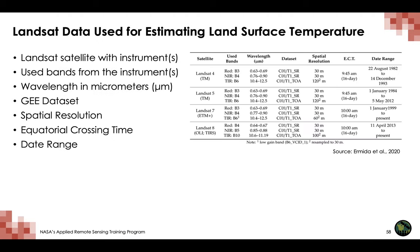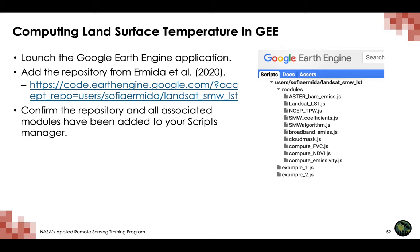This slide lists the Landsat satellites with instruments, bands used in the processing chain, spectral resolutions, naming conventions in Earth Engine, spatial resolution, equatorial crossing time, and date range for each satellite mission. To access the repository, assuming you've signed up for a Google Earth Engine account, you can launch the application and click on the provided link to add the repository from Ermita et al. You will find the added repository under the Scripts tab on the left side of your window. Confirm the repository and all associated modules have been added to your Scripts Manager before proceeding.